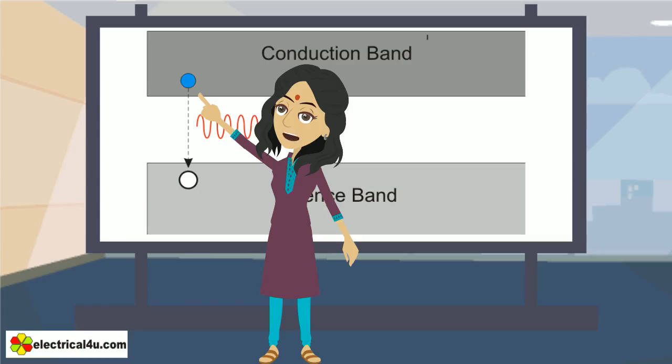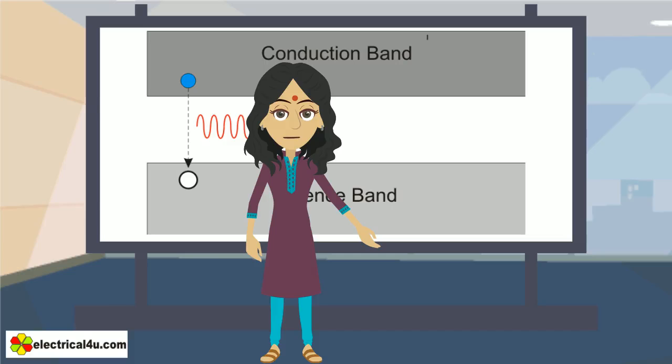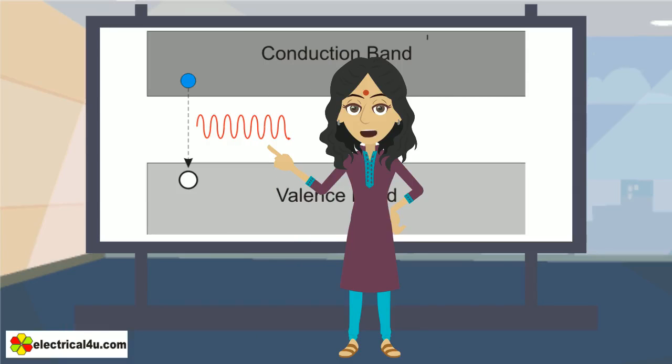electrons in the conduction band, that is, free electrons will jump to the hole in valence band. During this jump of electron from conduction band to valence band, electron emits energy in form of photon.